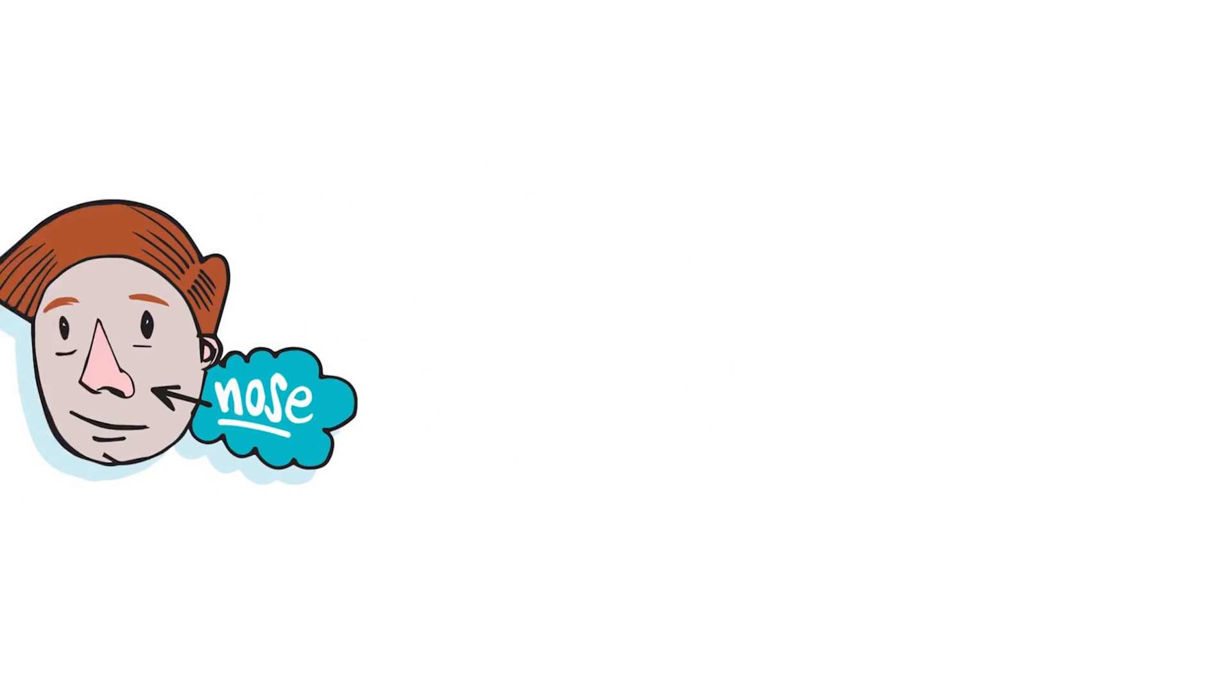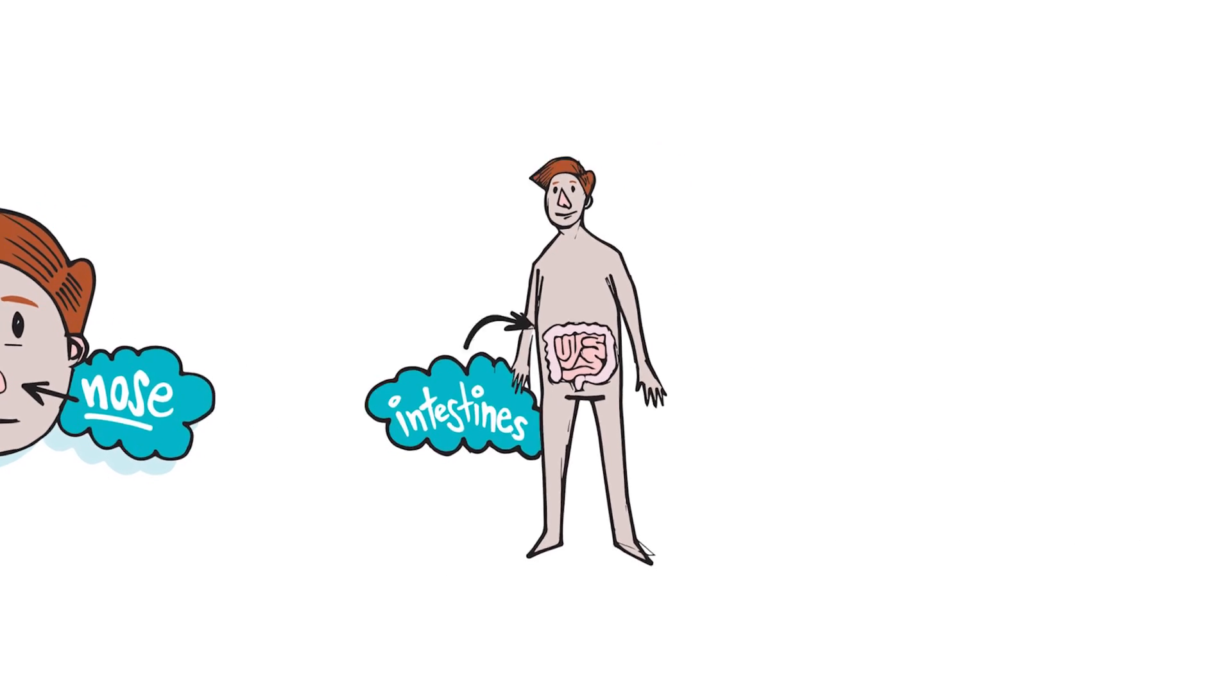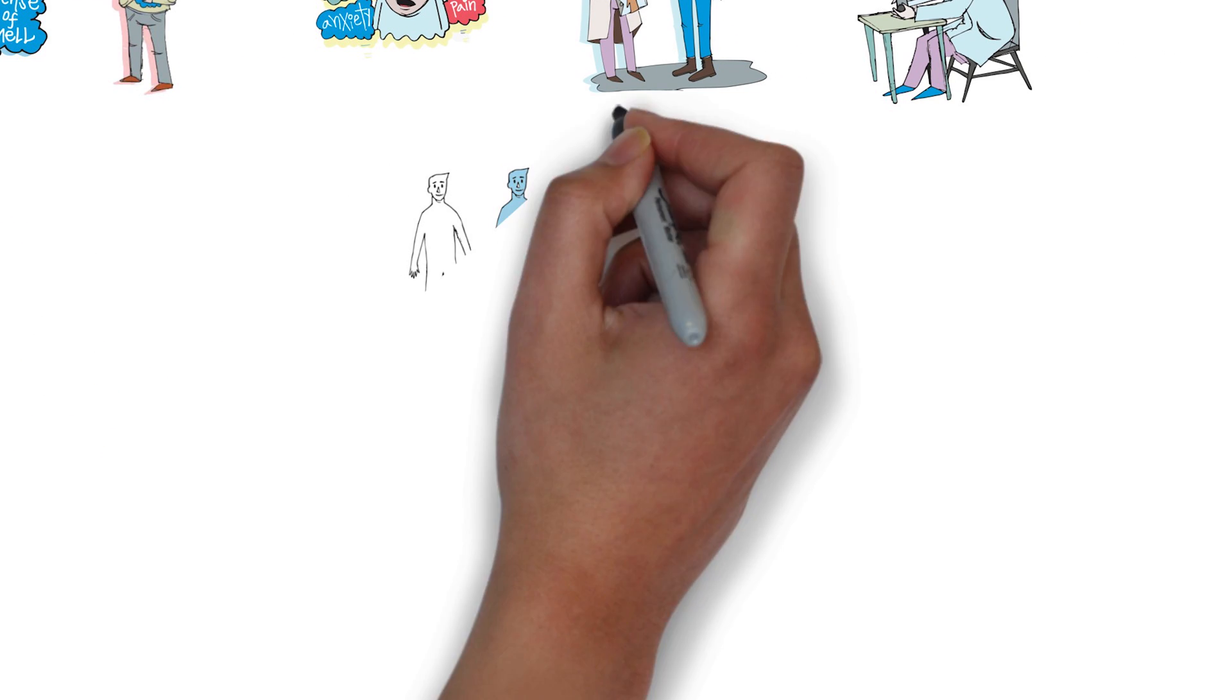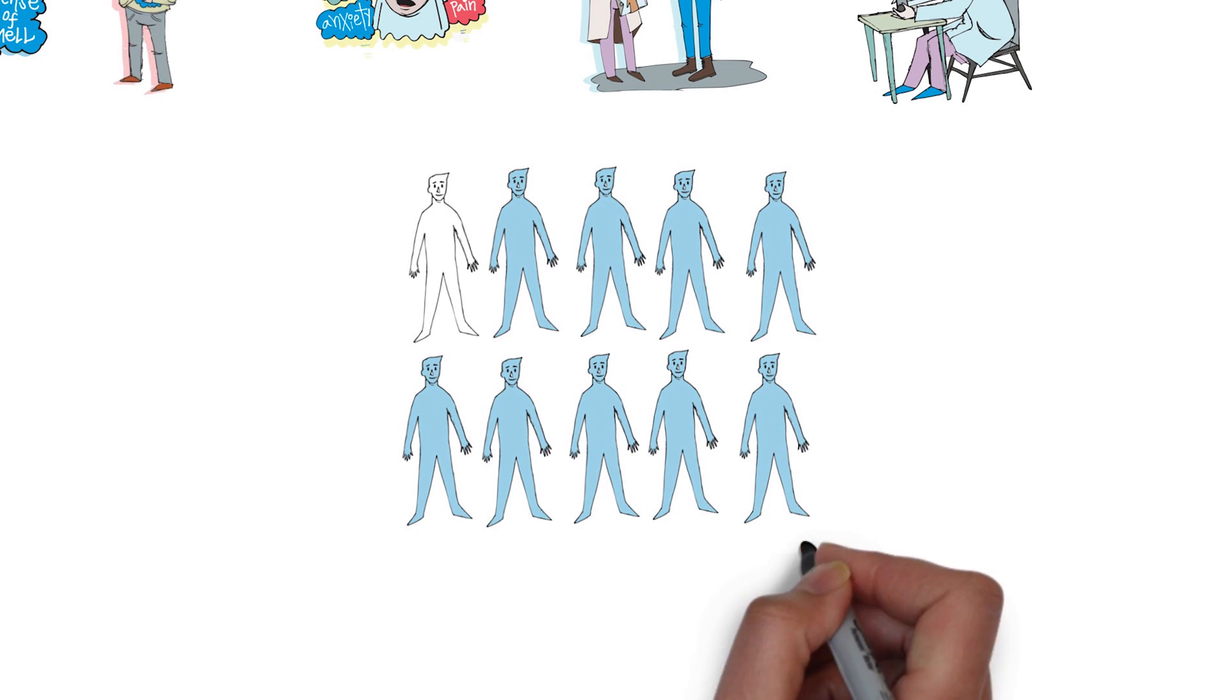Two of the best examples are loss of sense of smell and gastrointestinal problems. For instance, we know that about 90% of people with Parkinson's have a reduction in or total loss of their sense of smell years or even decades before their diagnosis.